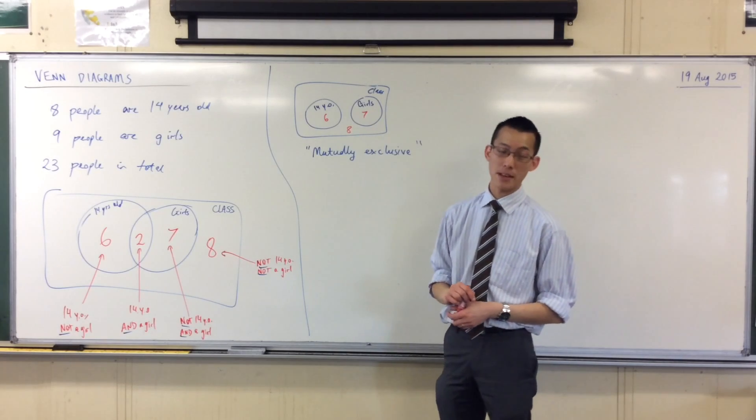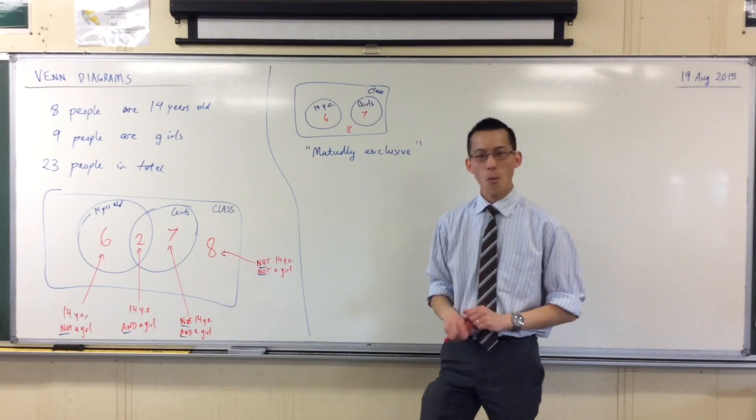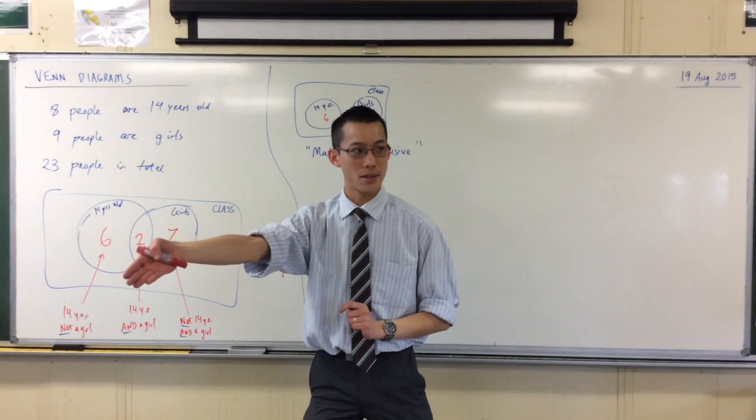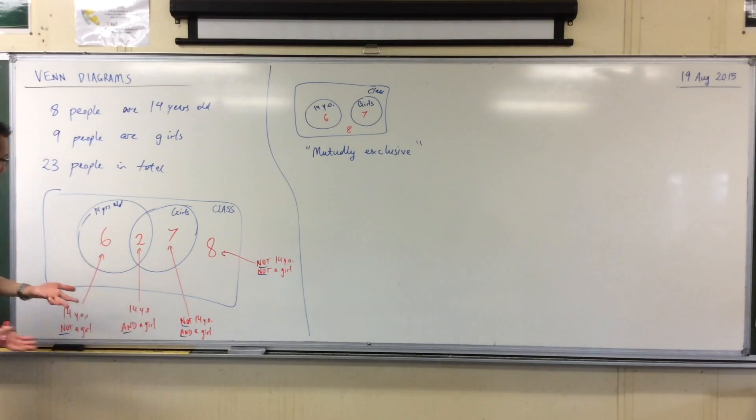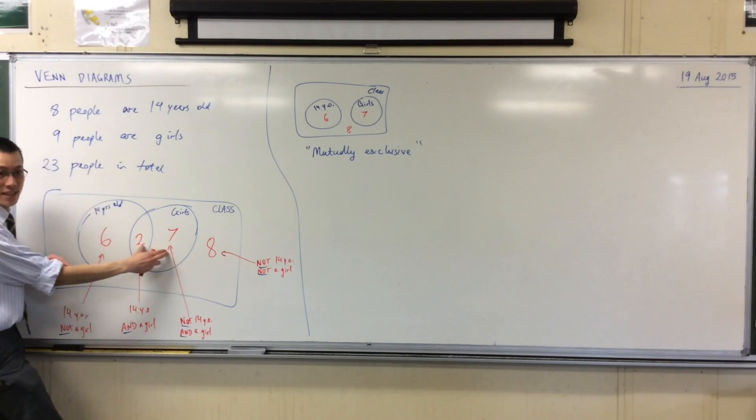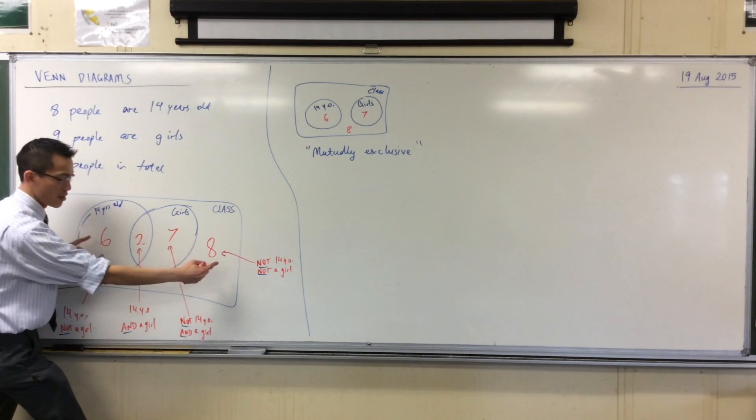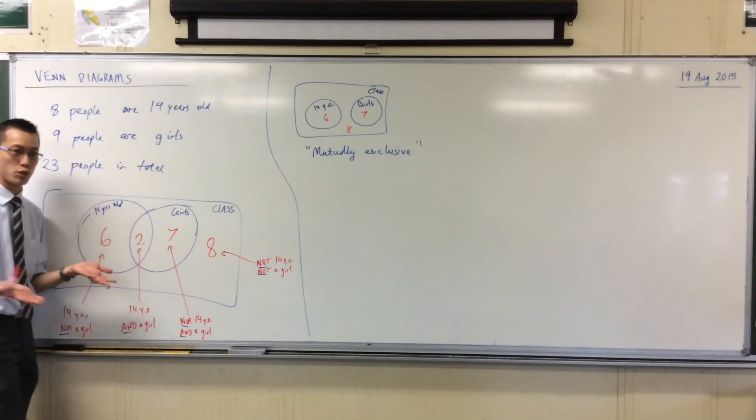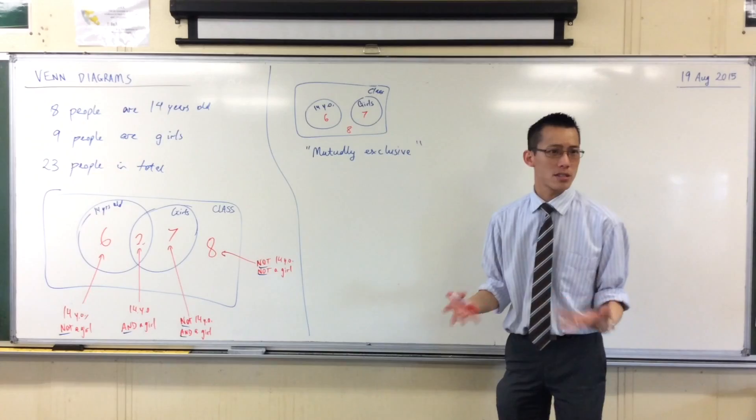Now pause for a second. This one's a bit trickier. When I say of the boys, that means I'm no longer considering the girls as part of the equation. Does that make sense? So how many people are boys in this diagram? It's going to be 14, isn't it? And the way I know is because it's the complement. The complement of nine, 14 is all the rest of them. So 14 is now my new sample space, because I'm not worried about the rest.